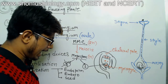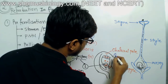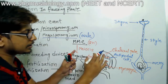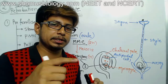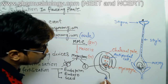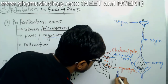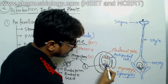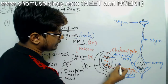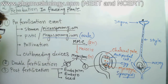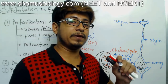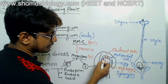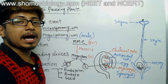The cells that arrange at the chalazal pole are known as antipodal cells. These antipodal cells remain there and don't have much function during double fertilization. The two cells present near the micropyle are known as synergids. The one cell that is in contact with the synergids turns into the egg cell — the female gamete. The two nuclei present surrounded by the large cytosol in the middle are known as the polar nuclei.